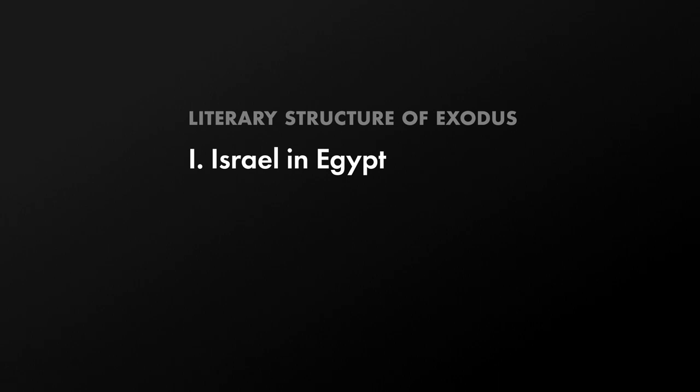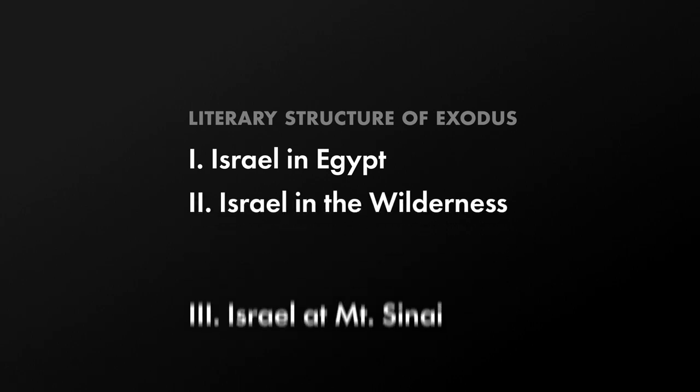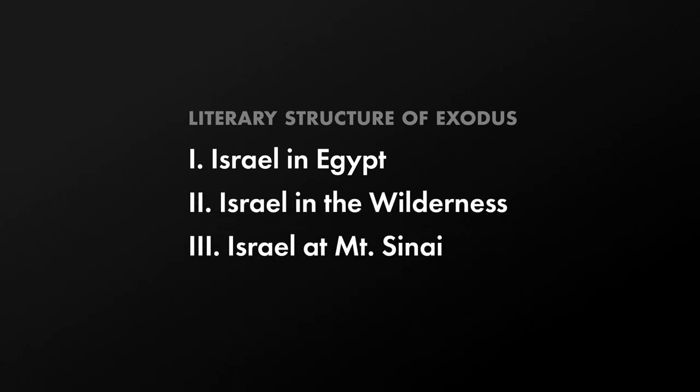Israel in Egypt, Israel in the wilderness, and Israel at Mount Sinai. Exodus is a journey narrative, like many of the great stories from the Odyssey to the Aeneid to the Divine Comedy, Pilgrim's Progress, and the Lord of the Rings. The central idea is that the physical journey symbolizes a moral, spiritual, intellectual, or theological journey, where the travelers begin in one moral or spiritual place and move to another.